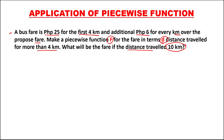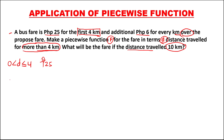For this problem, we have two conditions. For the first 4 kilometers, where distance is greater than 0 but less than or equal to 4, the fare is 25 pesos. For the other condition, over 4 kilometers or more than 4 kilometers, where distance is greater than 4, there is an additional charge of 6 pesos.